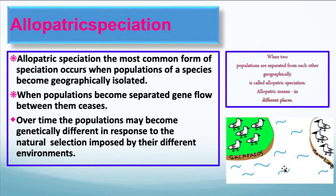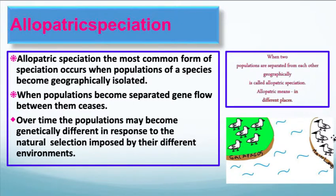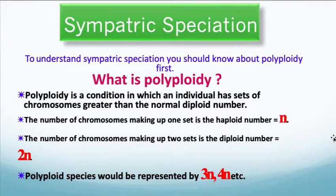Allopatric speciation is the most common form of speciation — it occurs when populations of a species become geographically isolated. When populations become separated, gene flow between them ceases. For example, birds that ended up on the Galapagos became geographically separated from the mainland with no gene flow between the two populations. Over time, the populations may become genetically different in response to the natural selection imposed by their different environments — those two environments look different and therefore put different environmental pressures on the organisms.